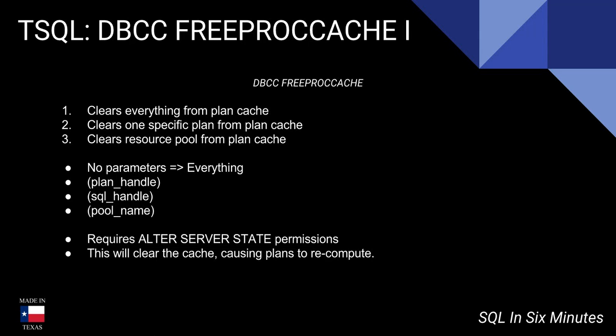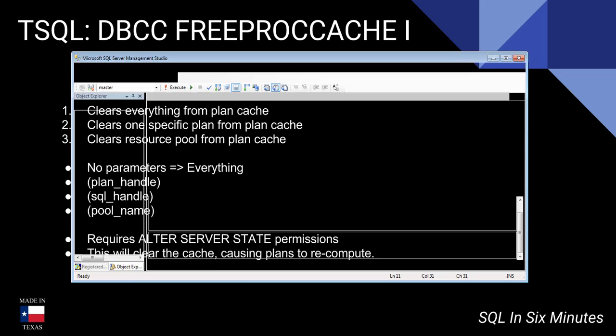Today we're going to be talking about DBCC FREEPROCCACHE. This is one of the DBCC commands that allows us to clear everything from the cache. We can also clear a specific plan from the cache using a SQL handle or plan handle, and we can clear the resource pool from the plan cache as well.